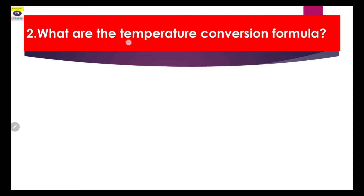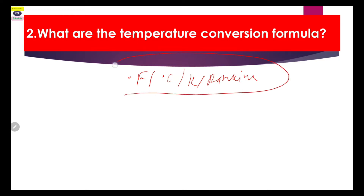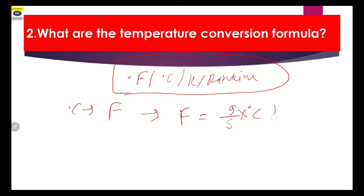The second question is: what are the temperature conversion formulas? There are four temperature scales — Fahrenheit, Celsius, Kelvin, and Rankine. When converting from Celsius to Fahrenheit, the formula is: Fahrenheit = (9/5 × °C) + 32. So when you are given a temperature in degrees Celsius, you can convert it to Fahrenheit using this first formula. Note it in your copy.